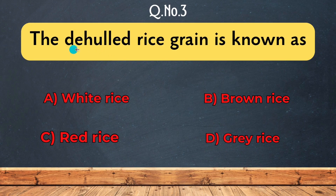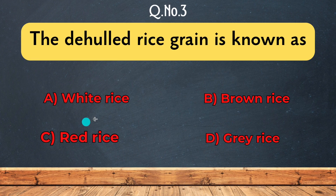Question 3: The dehulled rice grain. Options include White rice, Red rice, Gray rice, and Brown rice. The correct answer is Brown rice.